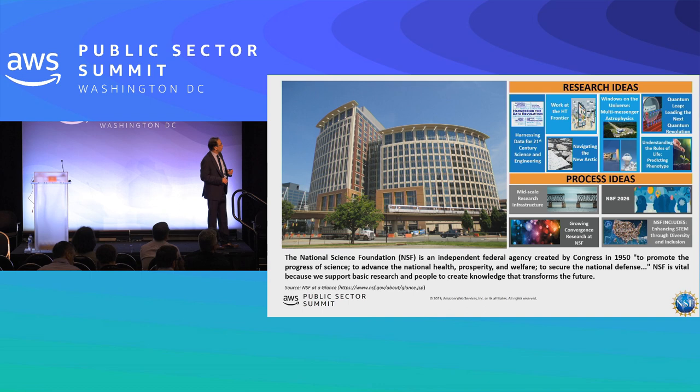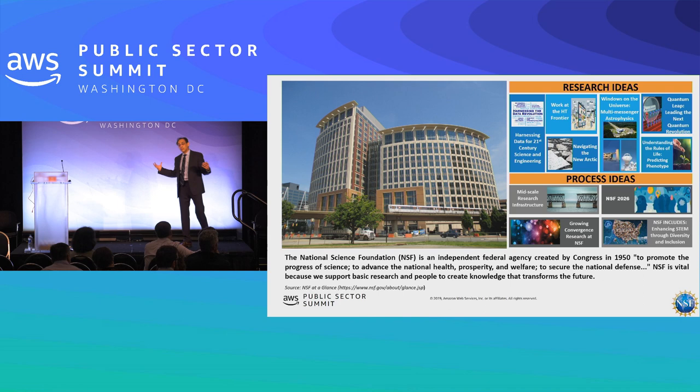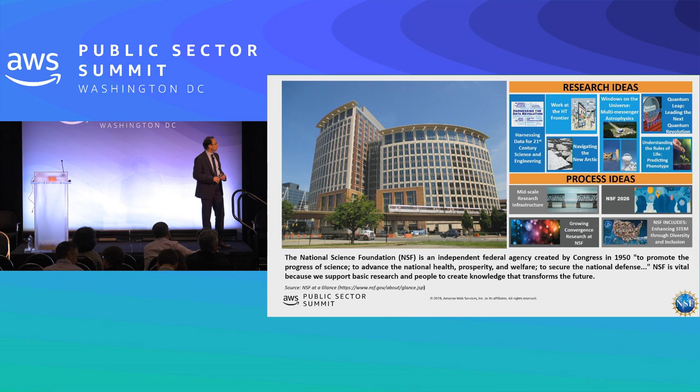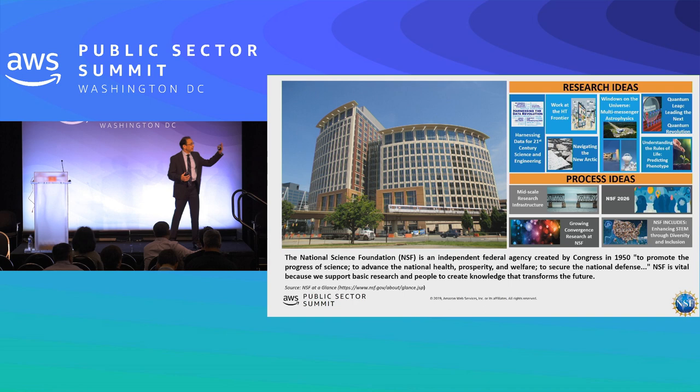The 10 big ideas include harnessing the data revolution, work at the human technology frontier, navigating the new Arctic, windows in the universe — that's multi-messenger astrophysics — rules of life, understanding the rules of life, and quantum leap. These are large challenges that impact all of society. In addition, we have process ideas such as mid-scale research infrastructure, growing convergence research, and NSF 2026. These are cross-cutting ideas that will drive a lot of what we do.